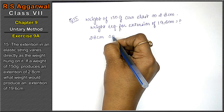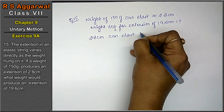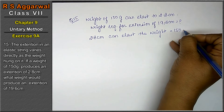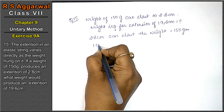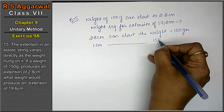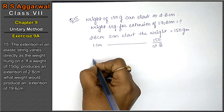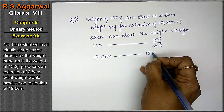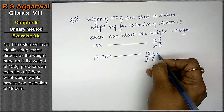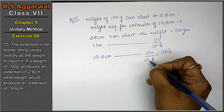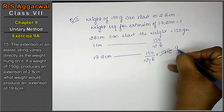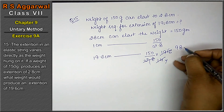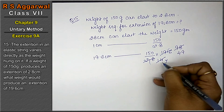So 2.8 cm extension is produced by 150 grams. And 19.6 cm extension — 150 upon 2.8 into 19.6. The decimal points cancel. Working through the simplification: 2 nines are 18, 2 eights are 16, 2 ones are 2, 2 fours are 8, 2 sevens are 14, 2 fours are 8, 2 nines are 18.